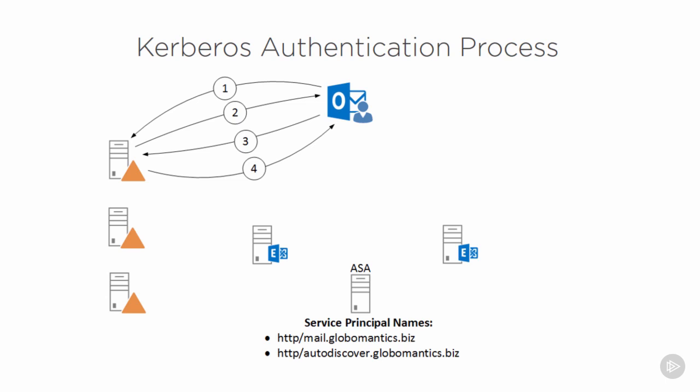Each Exchange server is configured with a shared credential for the ASA computer account. When the client presents a service ticket, the Exchange server uses the shared credential to decrypt it, and Kerberos authentication completes successfully. Overall, Kerberos is faster than NTLM and doesn't have the same bottlenecking issues — that's why it's recommended for Exchange 2016 deployments.